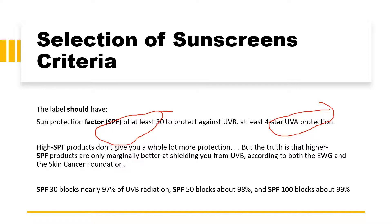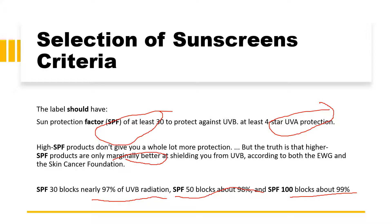Why is it not recommended to use very high SPF products? Higher SPF products are only marginally better at shielding you from UVB radiations. SPF 30 blocks nearly 97% of UVB radiation, SPF 50 blocks 98%, and SPF 100 blocks 99% — still not 100%. So it is recommended to use SPF 30 along with 4-star UVA protection.